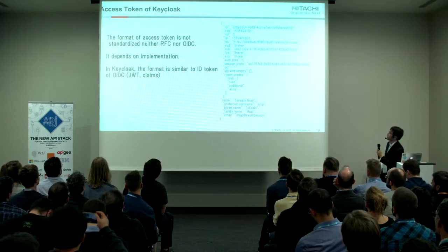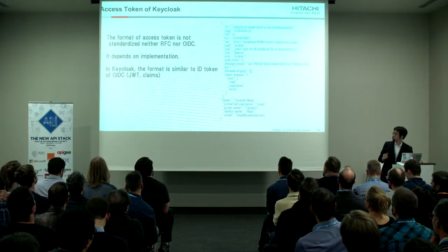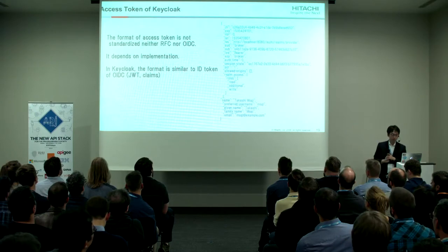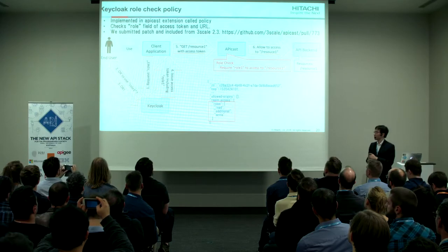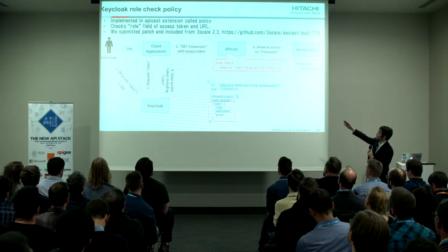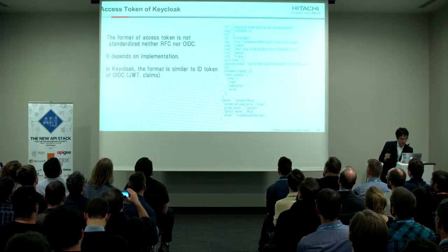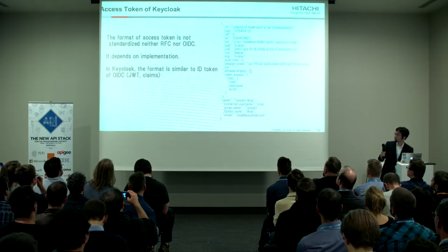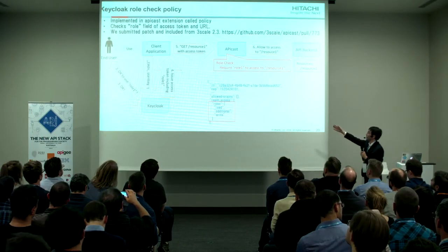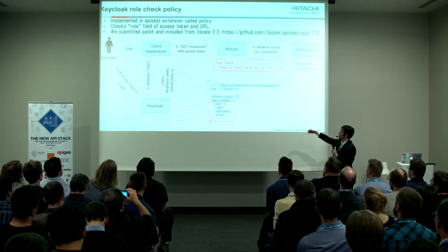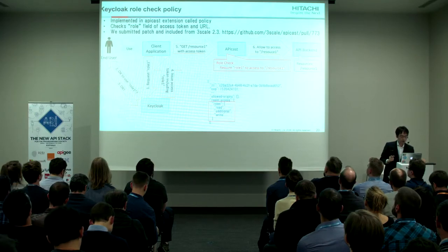The access token of Keycloak is a JWT. The format is almost similar to an ID token, but it is very specific to Keycloak. We developed an extension to the 3Scale API Gateway called the Keycloak role-check policy. This policy looks at the claims — the Keycloak access token includes roles — and allows or denies access based on these roles. We submitted the pull request and it is included from 3Scale 2.3.